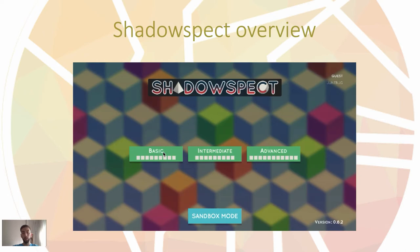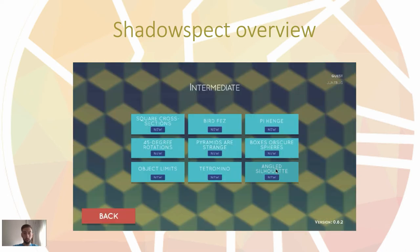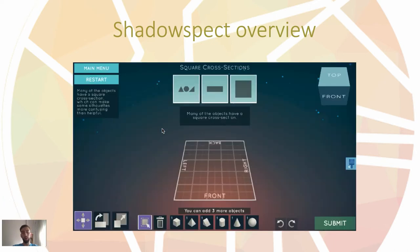Now we're going to try to solve one of the puzzles called Square Cross-Sections. As we see, we have on the top of the scenario a set of silhouettes that we have to obtain from the primitive shapes on the bottom of the scenario.